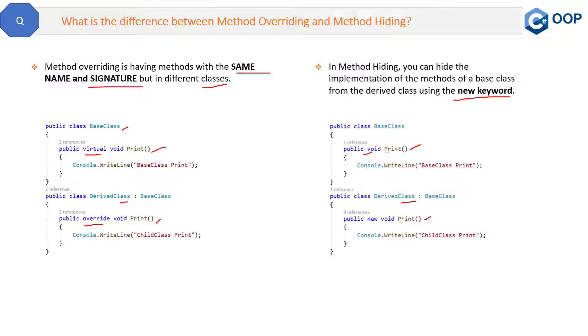What is the difference here? Here we have not marked the base class as virtual and no need to mark the derived class method as override. Rather, we will mark the derived class method with the new keyword.